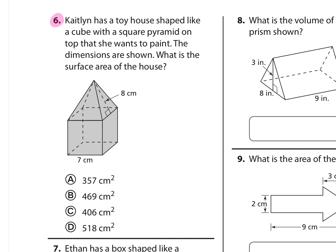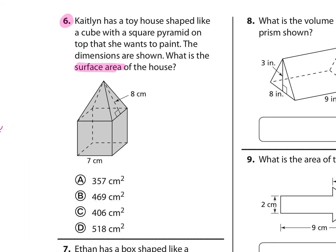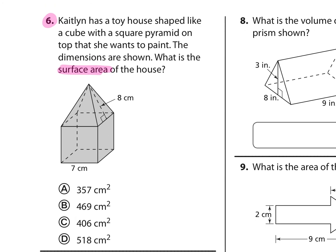Number 6. Kaitlyn has a toy house shaped like a cube with a square pyramid on top that she wants to paint. The dimensions are shown. What is the surface area of the house? Let's start with the top portion. We know that it is made up of these triangles. There's 4 triangles. Each one has a formula for area that's always the same. The area of a triangle is 1/2 base times height. The base is the distance across, which is 7 centimeters matching the cube. The height is 8 centimeters. Half of 7 times 8 is 28.